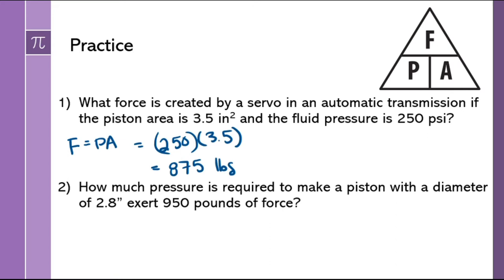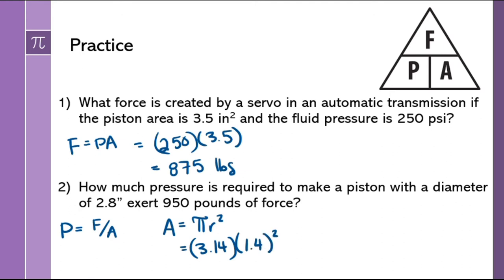For problem two, we're solving for pressure — pressure equals force divided by area. We have a force of 950 pounds, but we're given a diameter instead of an area. It's a piston, so assume it's a circle: A equals pi r squared equals 3.14 times r squared. If the diameter is 2.8, the radius is 1.4. Squaring 1.4 first before multiplying by pi gives an area of 6.15 inches squared. Pressure is then 950 divided by 6.15, which equals 154.5 psi.